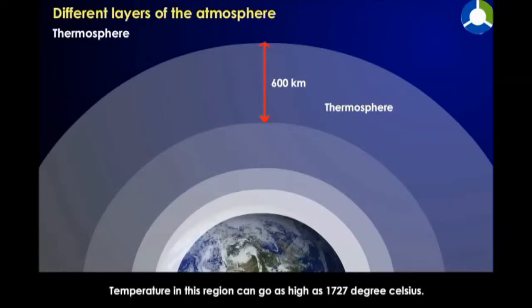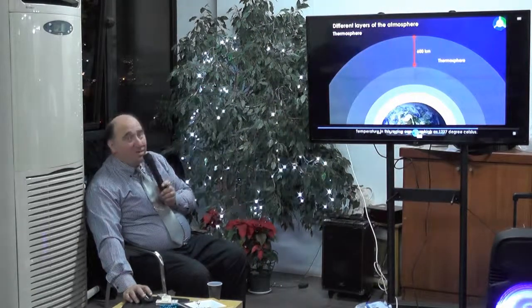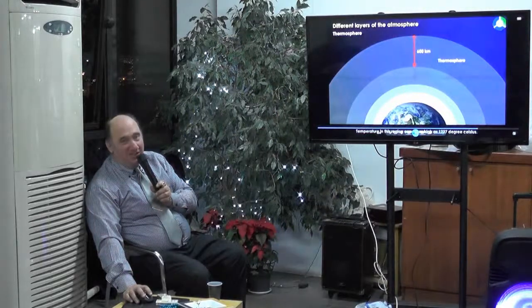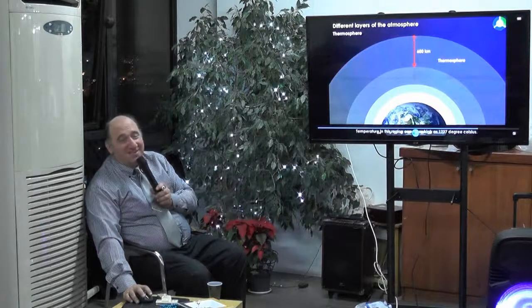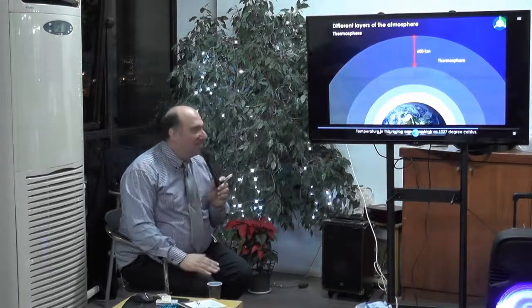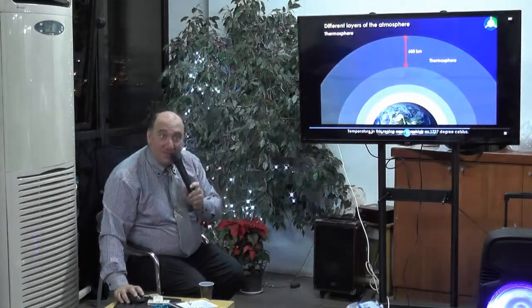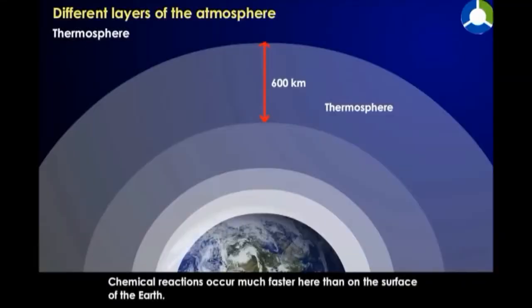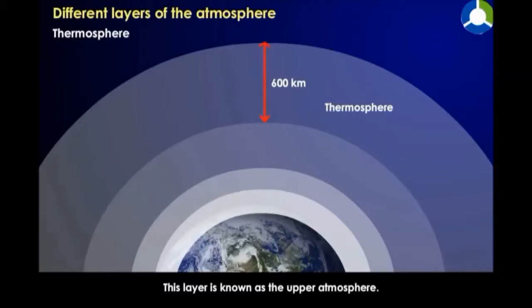The temperature in this region can go as high as 1,727 degrees Celsius — you can melt platinum here. Before it was minus 50 to 100, and now it's 2,000 degrees. Chemical reactions occur much faster here than on the surface of the earth. This layer is known as the upper atmosphere.